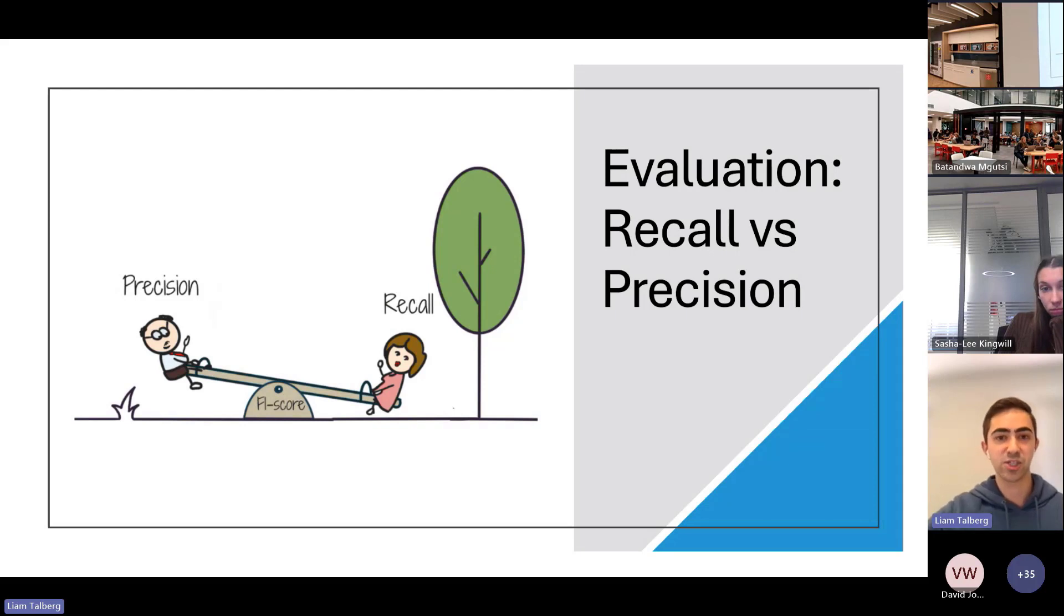On the other hand, precision measures the relevance of our retrieved results. It answers, of all the documents retrieved by the search, how many are relevant? Thus, precision means our search engine can return mostly relevant results and minimizes false positives. Precision and recall often work in contrast of each other, but it's desirable when designing a search engine to have both high recall and high precision. Thus, search engine engineers need to carefully balance these two factors.